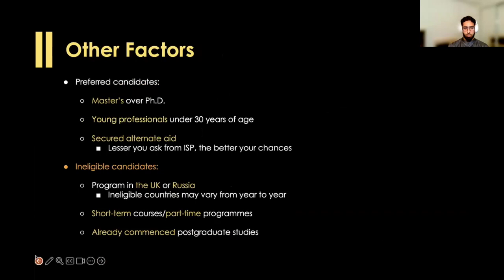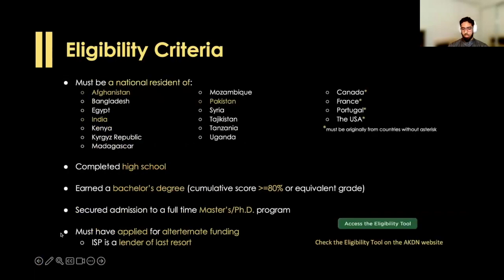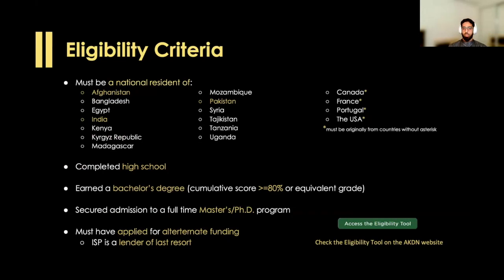Before we move on — in the bottom right corner there's an accessibility tool you can find on their website. If you're not sure whether you're eligible, go to Google, type in 'Aga Khan ISP,' and it'll bring you to their website. On the website you'll find this accessibility tool — it'll ask you a couple of questions: what country you're from, where your program is, whether it's full-time or part-time. It basically asks all of these questions and then tells you whether or not you're eligible to apply.